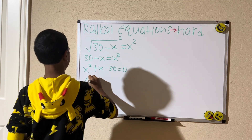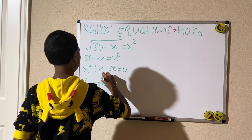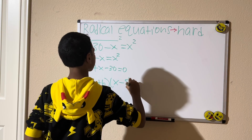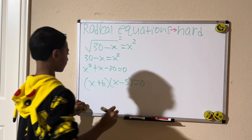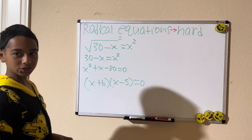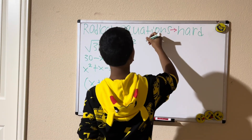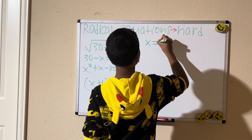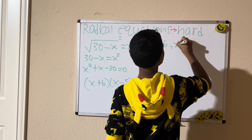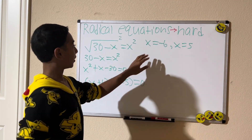Then the 30 goes to the next side and it becomes negative 30, so we have x squared plus x minus 30 equals zero. Now we need to factor this, which gives us x plus six times x minus five equals zero. Setting each factor equal to zero, we get x equals negative six and x equals five.